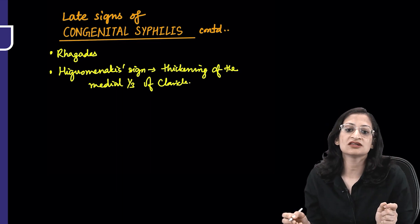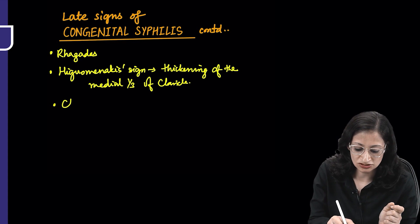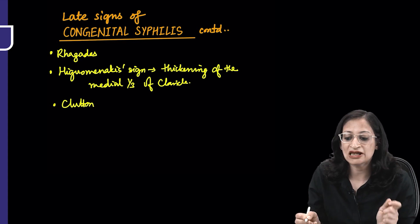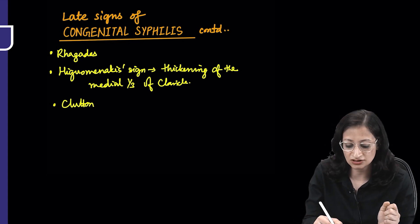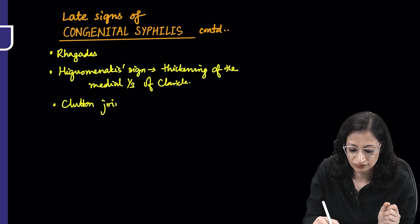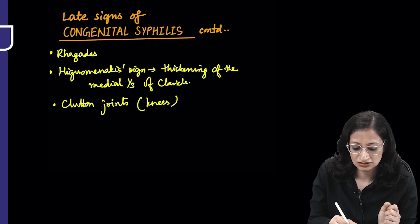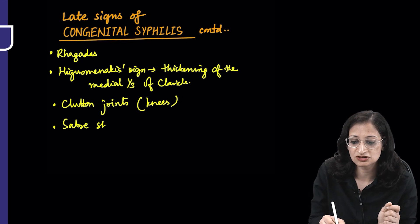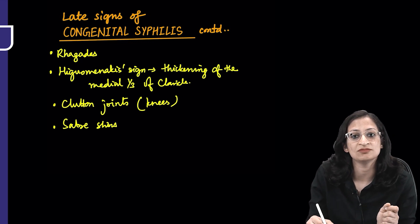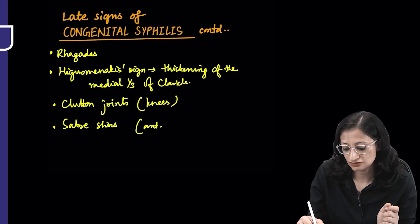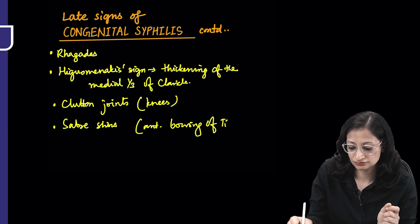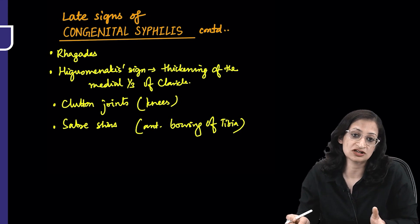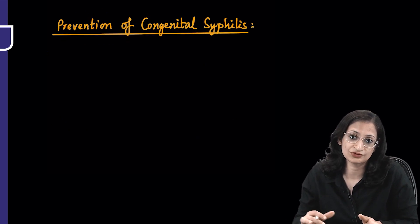Apart from that, there can be Clutton's joints involving the knees, painless joint swelling, and they can have sabershins, which is the anterior bowing of tibia. These are some of the late signs of congenital syphilis that you must know.